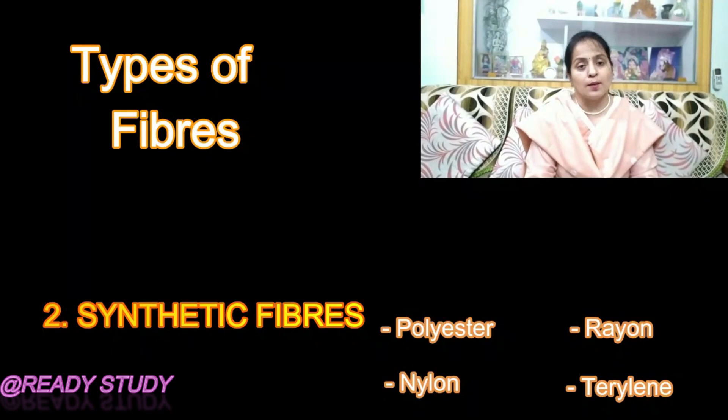Cotton is a natural plant fiber. It requires a warm climate to grow. In India, cotton plants are grown in Gujarat and Maharashtra, where black soil is best suited for their growth. We get cotton fibers from the fruits of cotton plants, known as cotton bolls. Cotton fiber is used for making cloth, pillows, mattresses, and wicks — the cotton threads used in oil lamps.